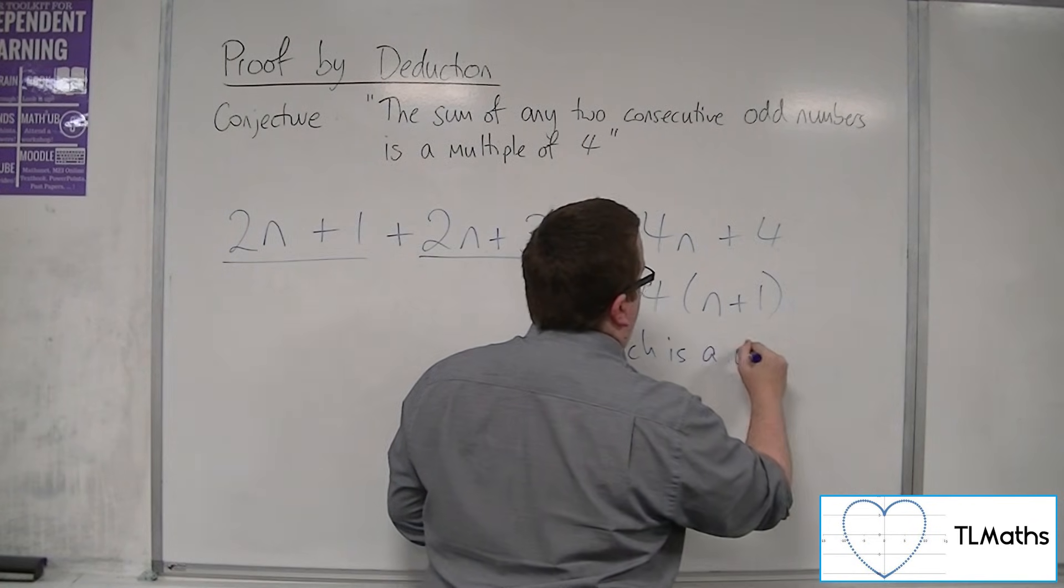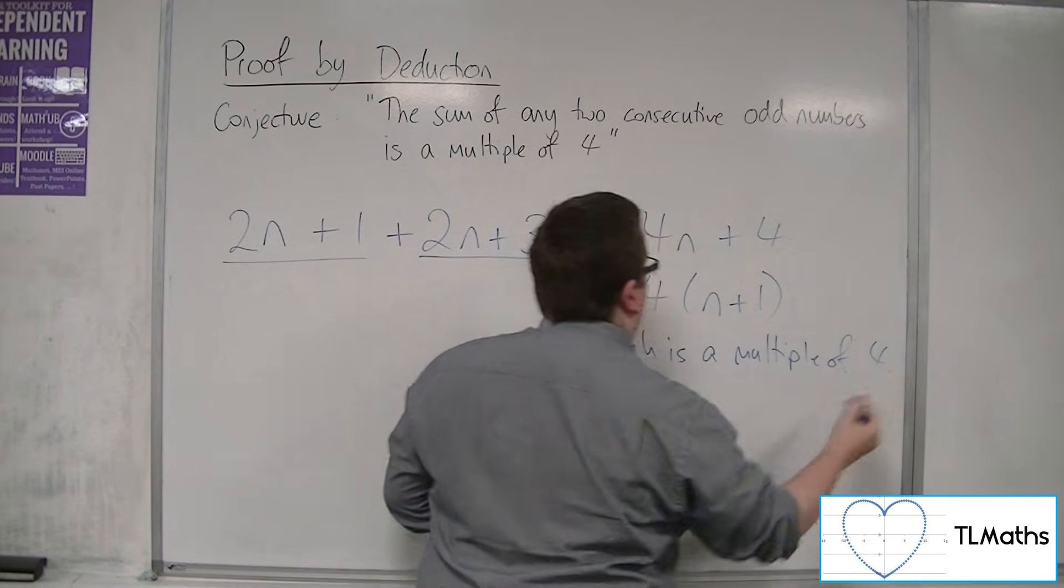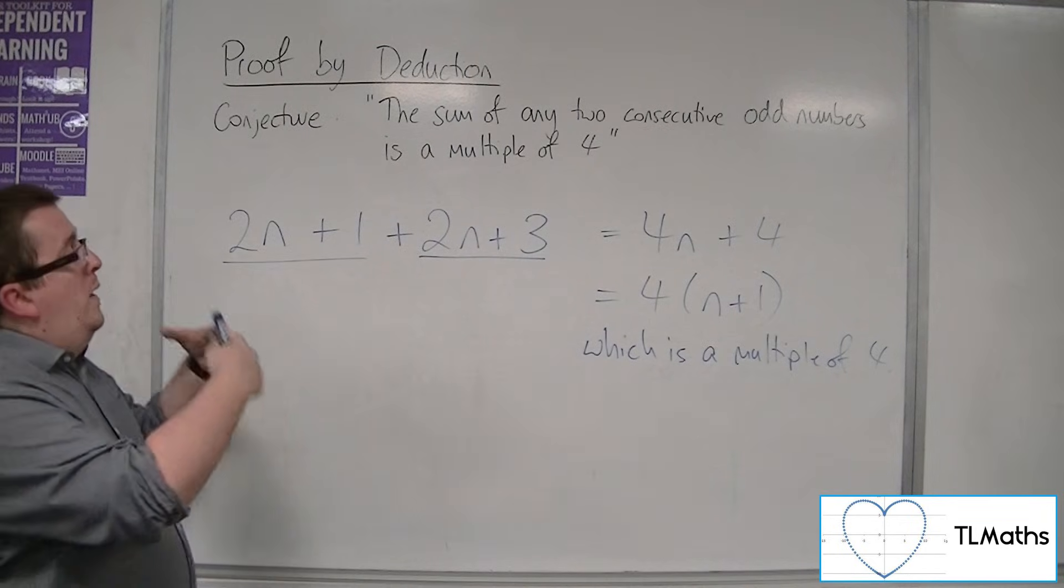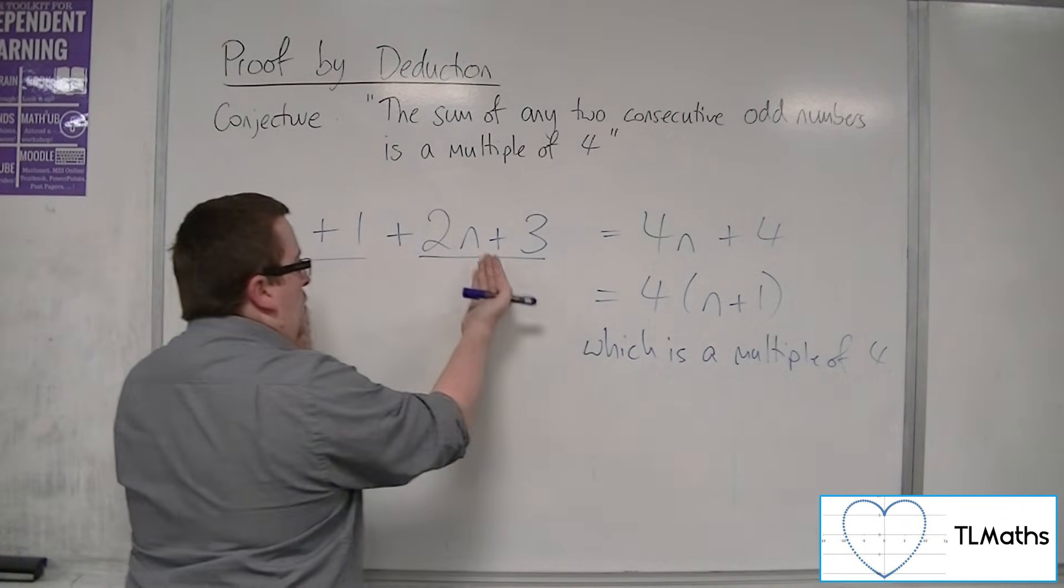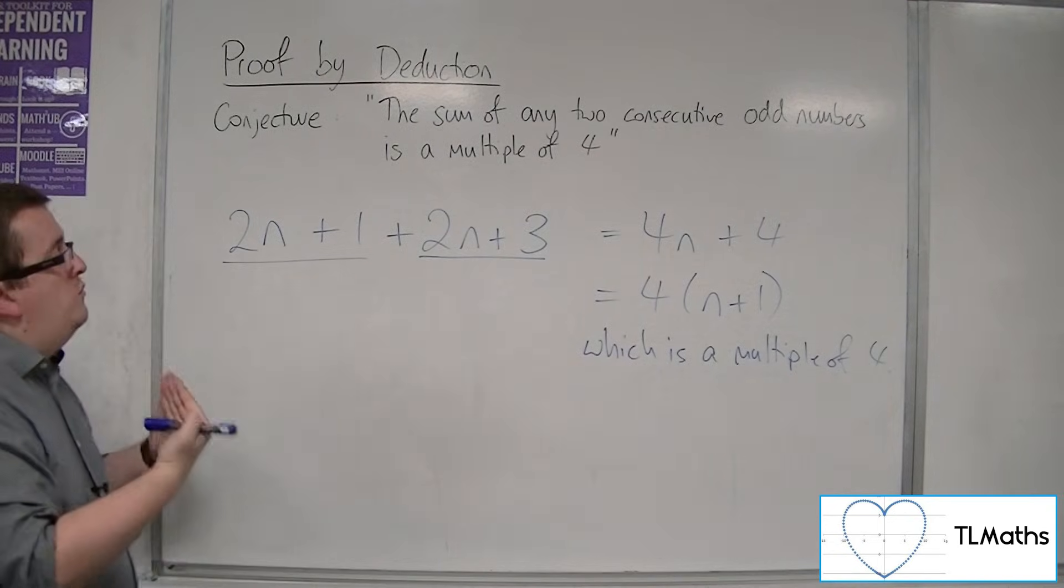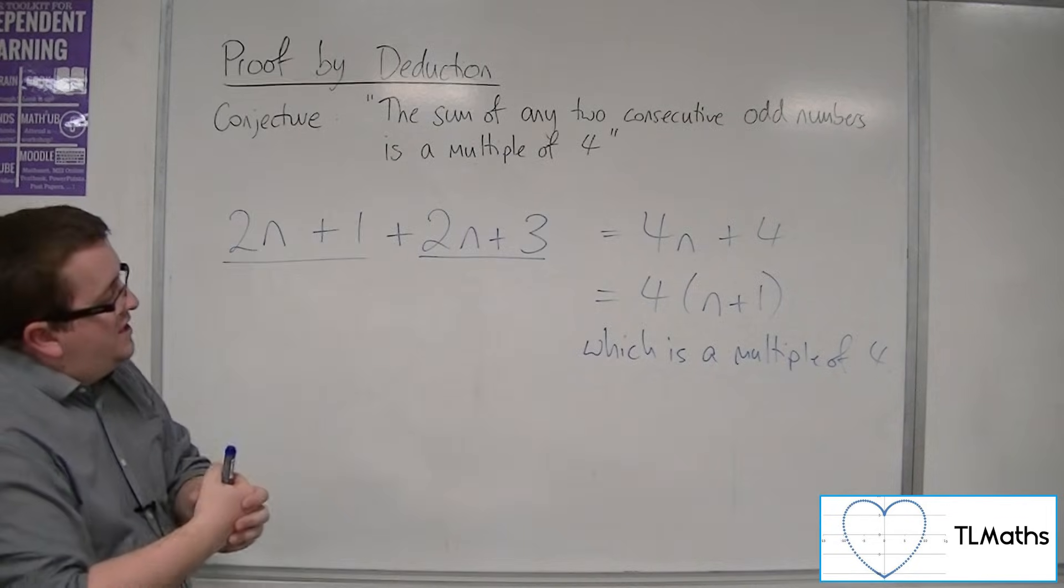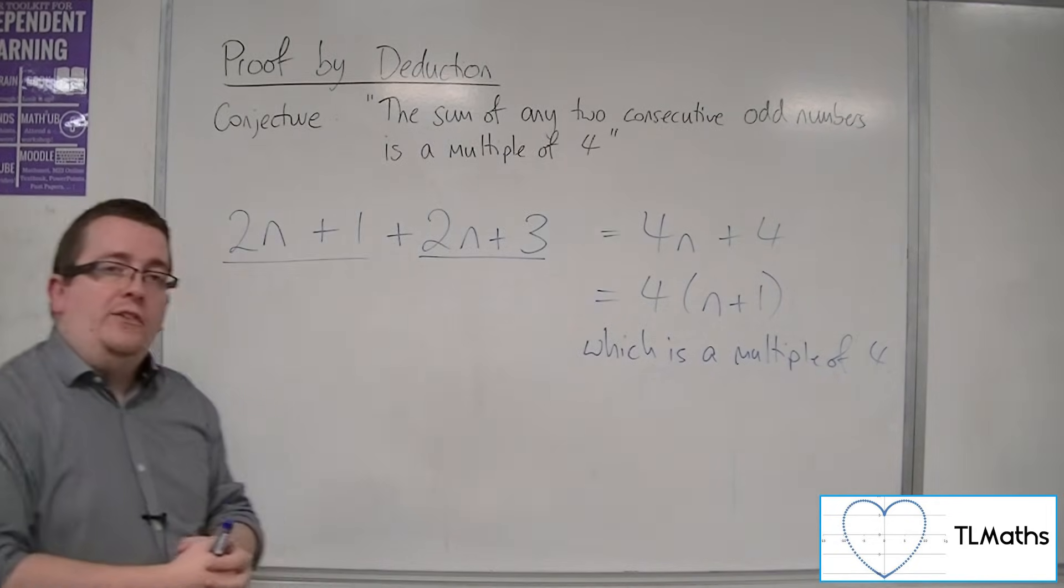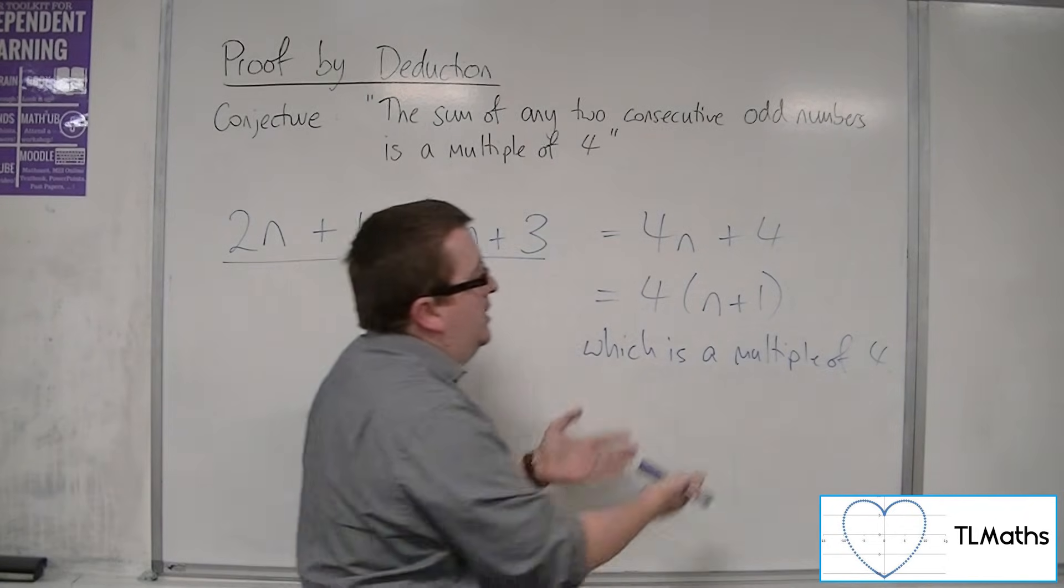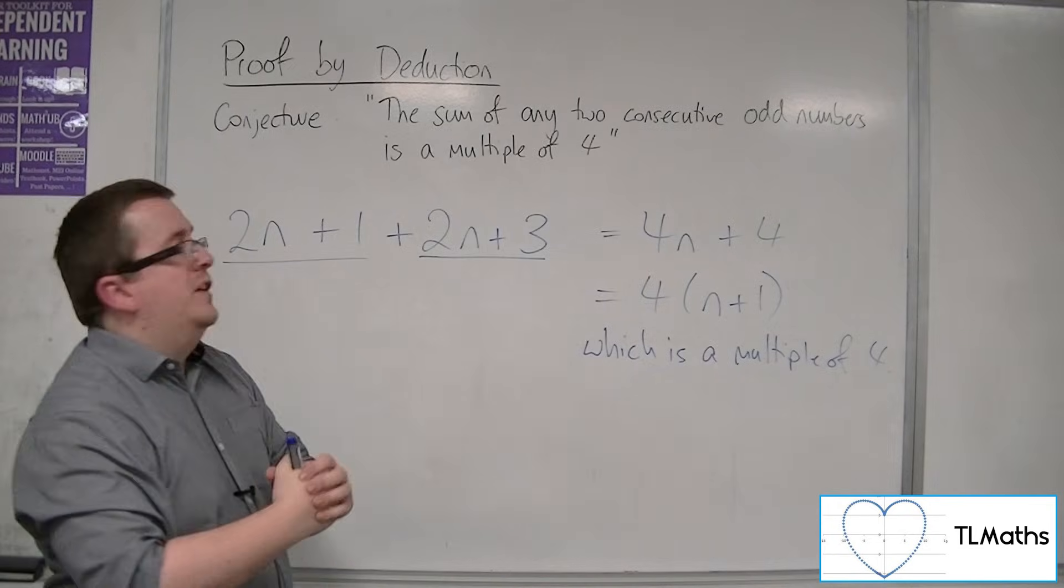You can see we started with logically thinking about what an odd number was, how we could write it down. Then we added them together because it told us the sum, and then we used factorizing to get there. We used a logical sequence to get to our final result, which proves the conjecture.